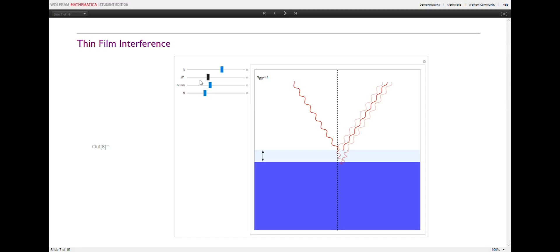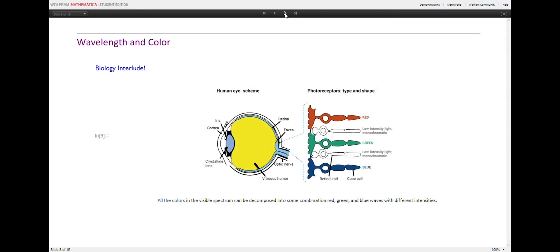You might be wondering why changing the wavelength makes the waves different colors. That's because the visible light spectrum can be represented by waves of different wavelengths, ranging from 380 nanometers to 750 nanometers. The human eye has light receptors, or cones, that actually only perceive three colors from the visible spectrum: red, green, and blue.